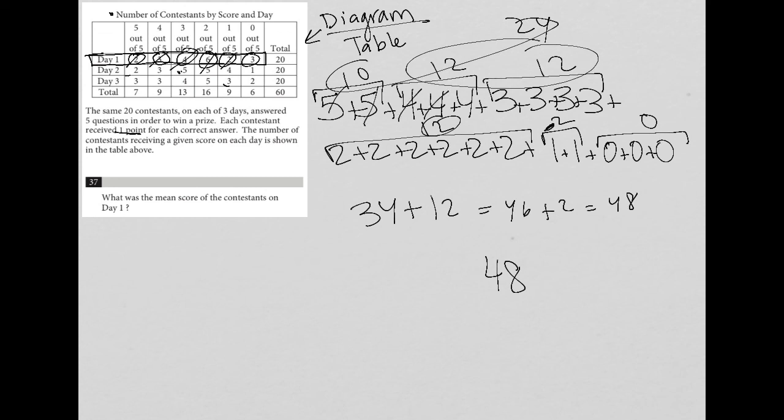So it's 1, 2, 3, 4, 5, 6, 7, 8, 9, 10, 11, 12, 13, 14, 15, 16, 17, 18, 19, 20. So divide that by 20.